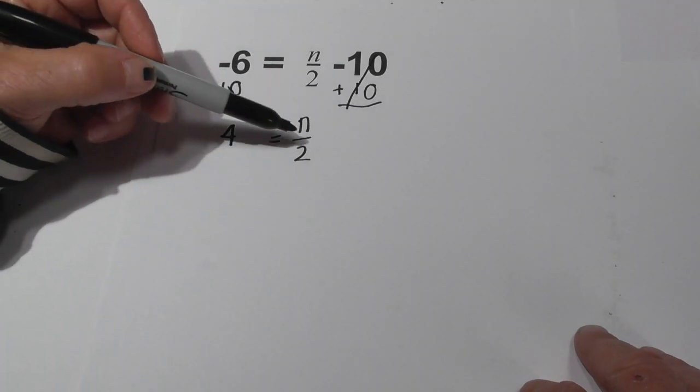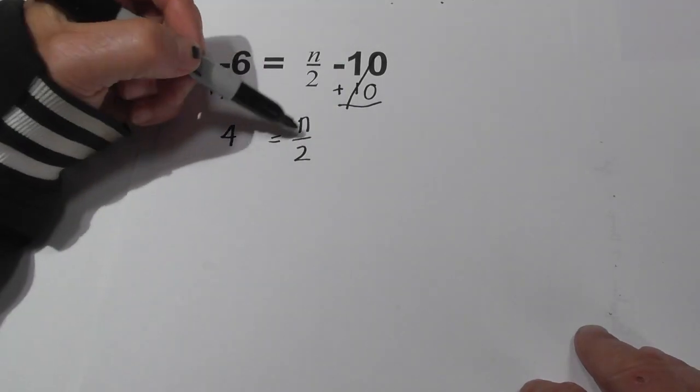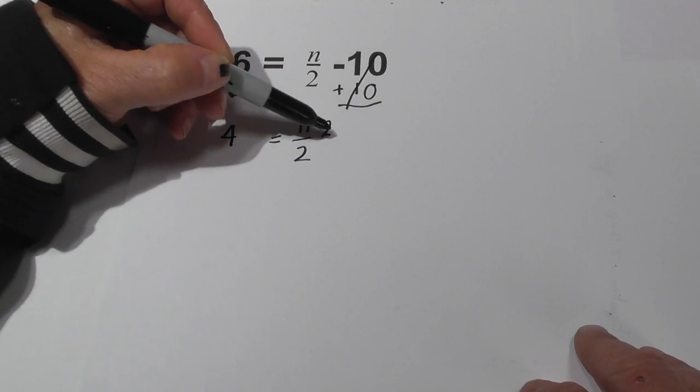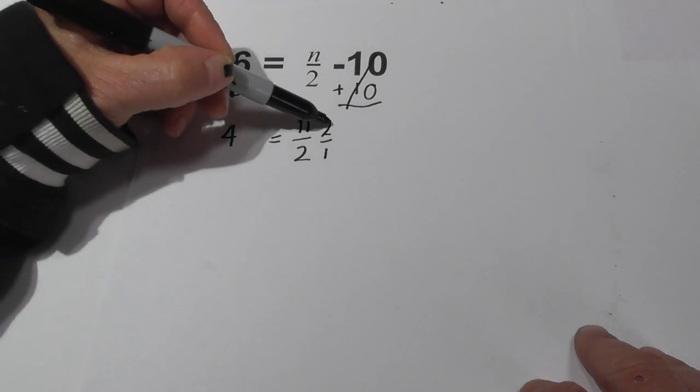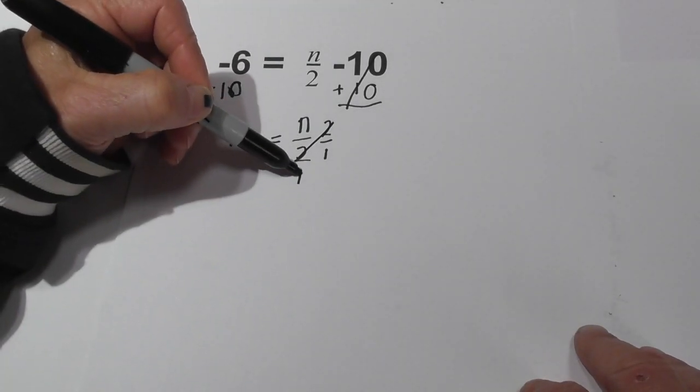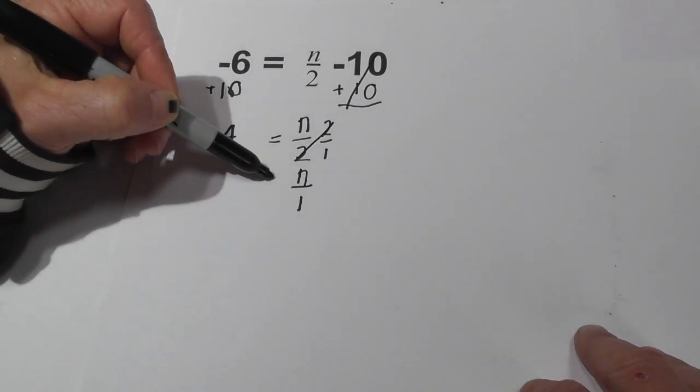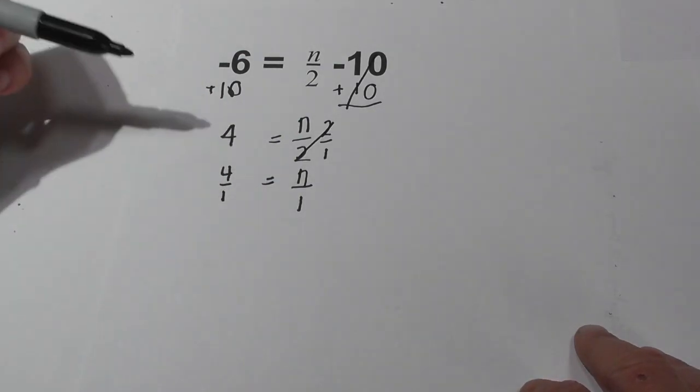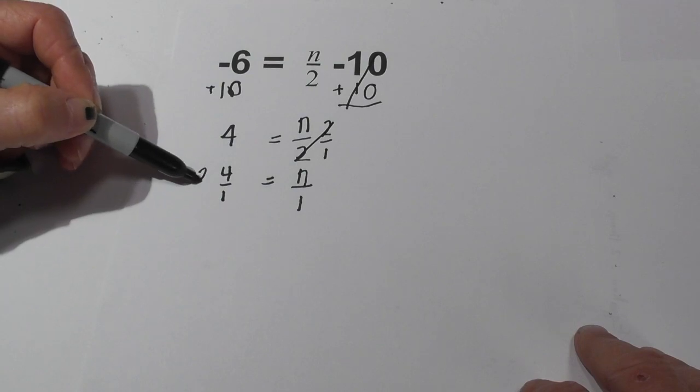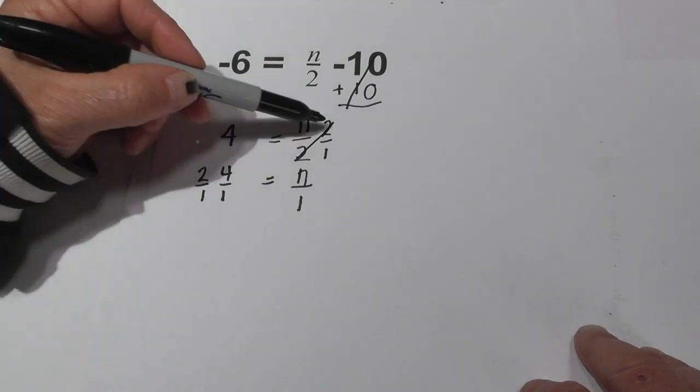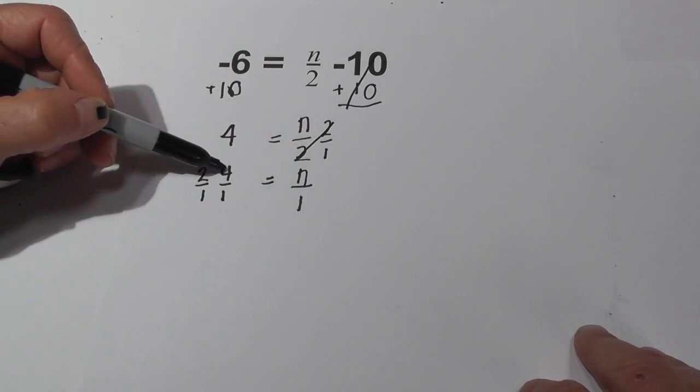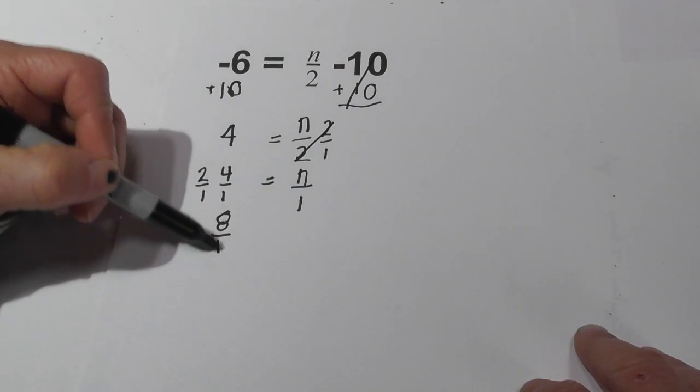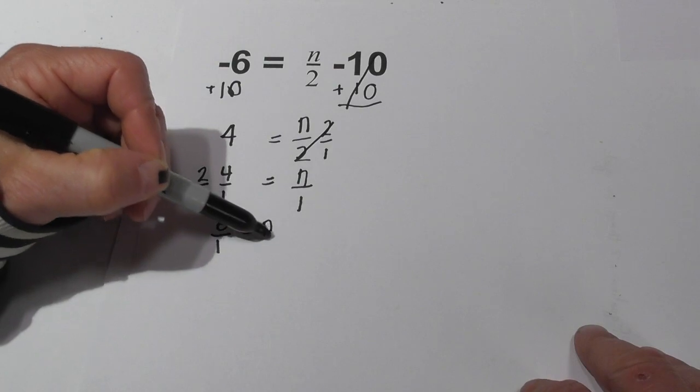Now what I can do is multiply it by its reciprocal to get rid of the 2. So I will go 2 over 1. The 2's cancel, you bring down n over 1 equals. I'm going to rewrite the 4 just as 4 over 1 times 2 over 1. 4 times 2 is 8 over 1 equals n over 1.